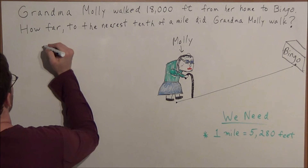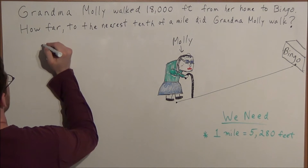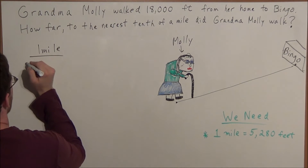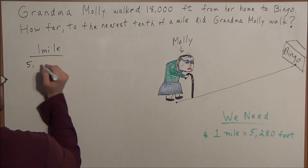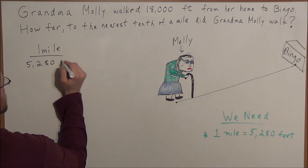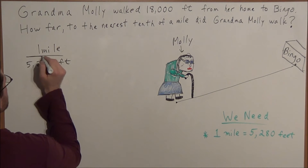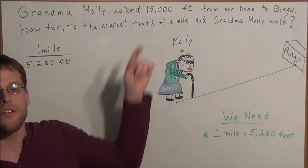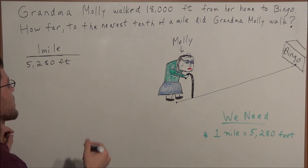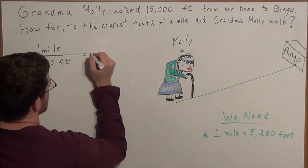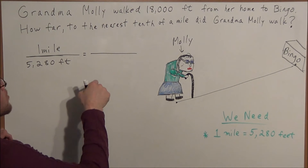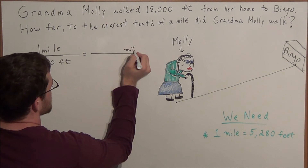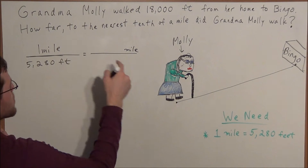So we're comparing miles to feet, so we have one mile to 5,280 feet. And now with this ratio, we can find out how many miles there are in 18,000 feet. We can accomplish this by setting up a proportion. Remember, the second ratio also needs to be comparing miles to feet, because that was the comparison we made in the first ratio.